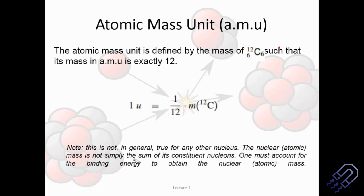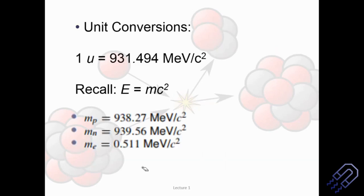The nuclear or atomic mass is not simply the sum of its constituent nucleons. For example, for nitrogen with six protons and seven neutrons, if you combine them the total mass is not 13 — there is some mass loss due to binding energy. That is why nitrogen is not taken as the standard. In general, one atomic mass unit is 931.494 MeV per c squared, which we can round to 931.5 MeV per c squared for all practical purposes.